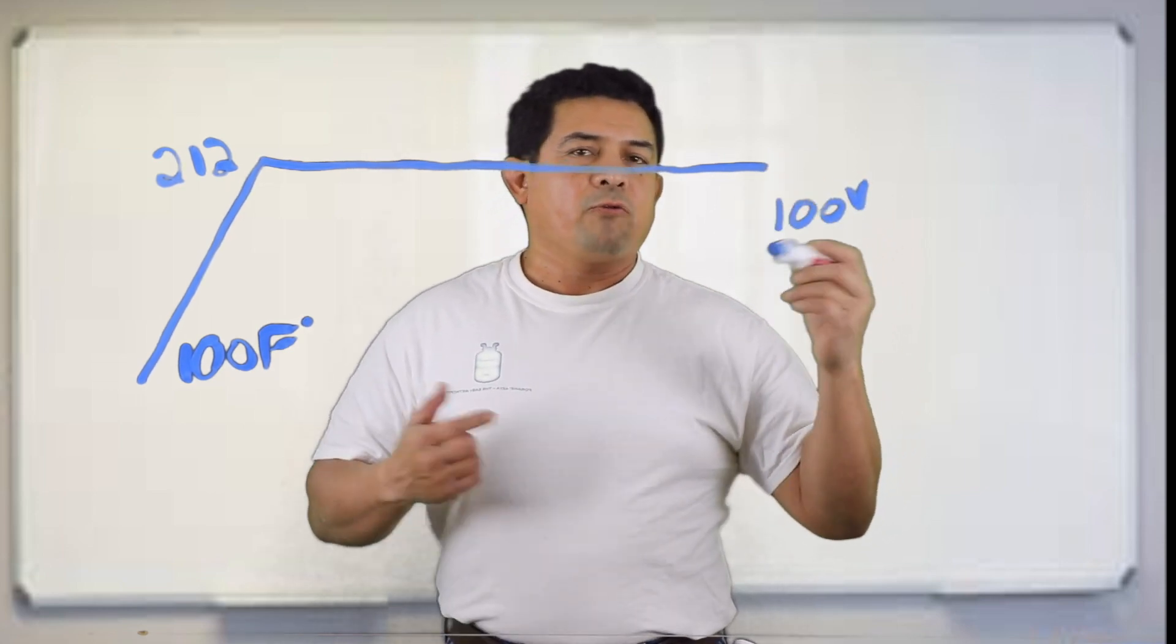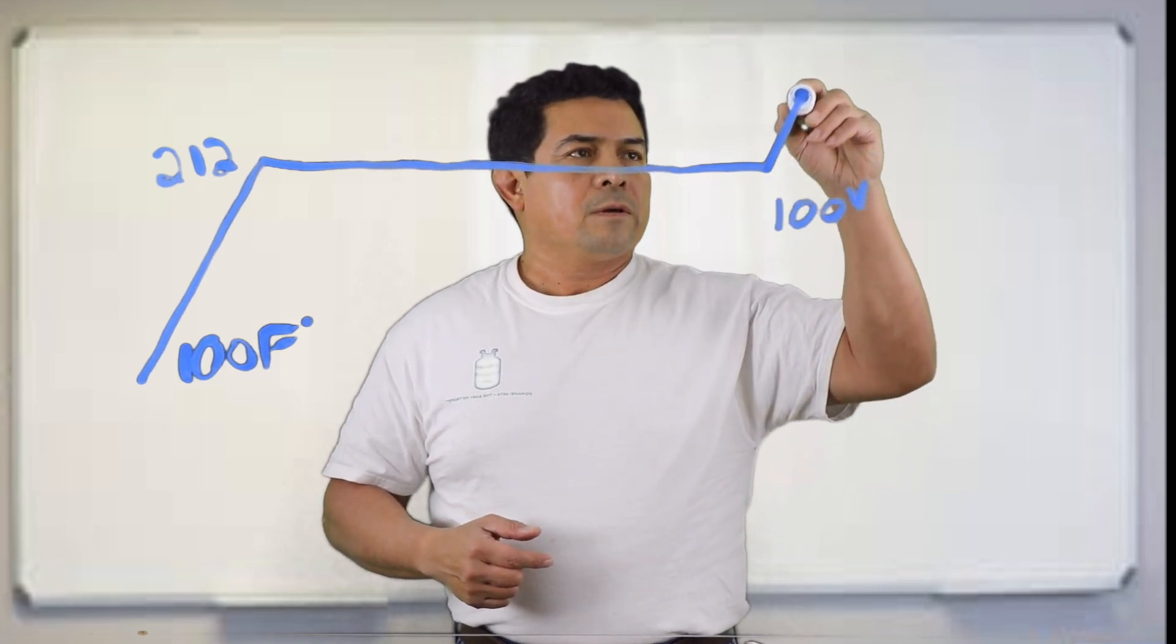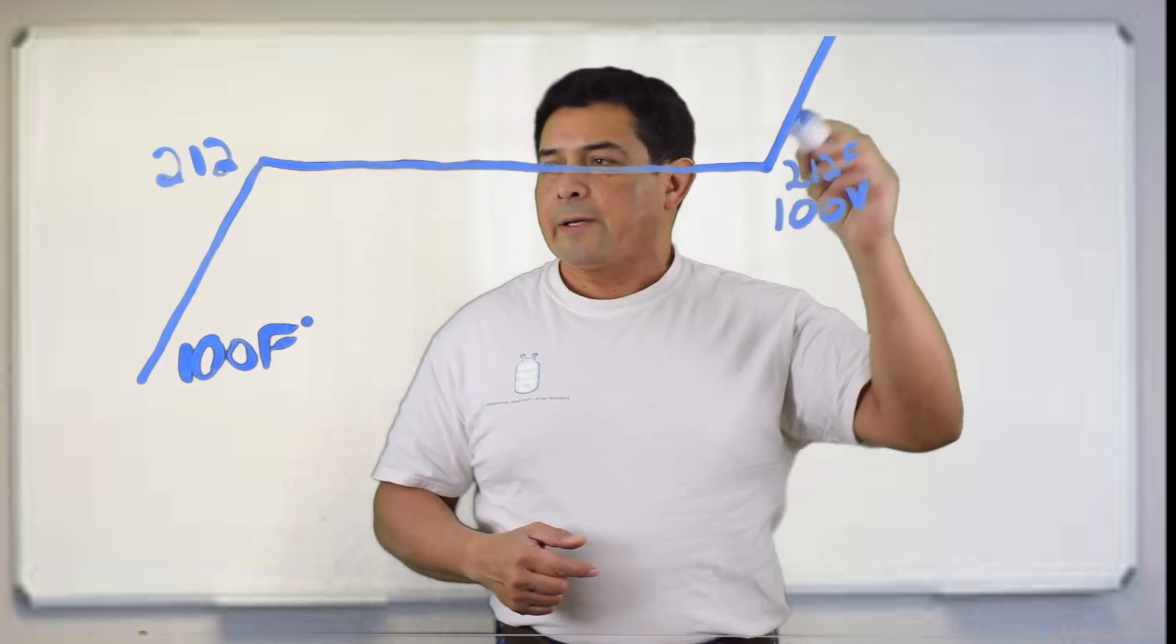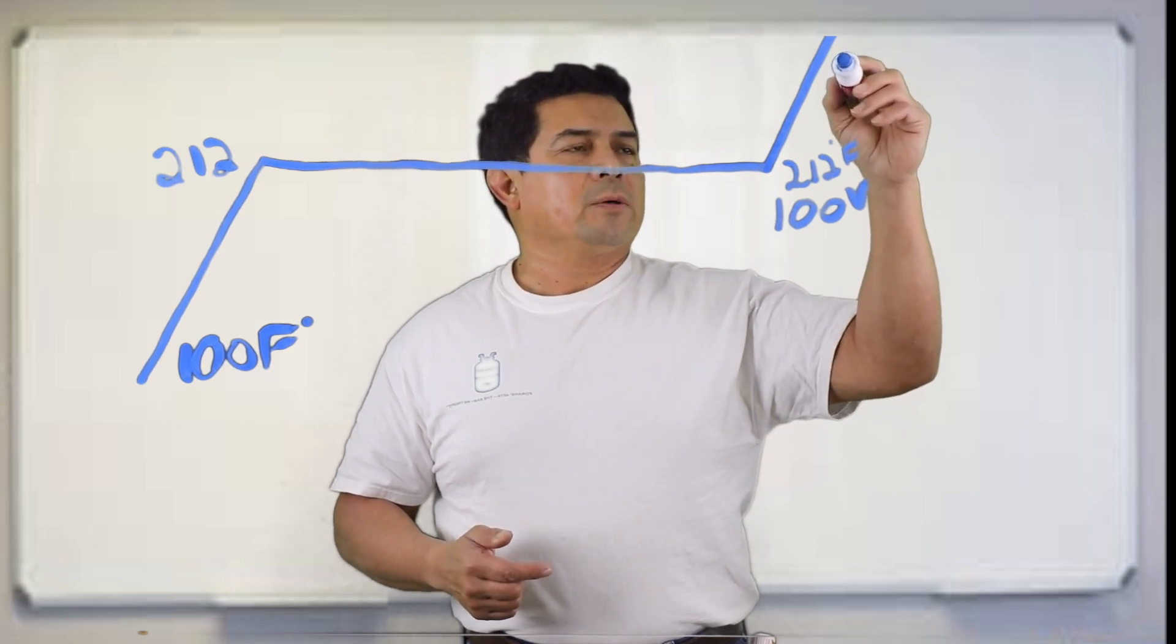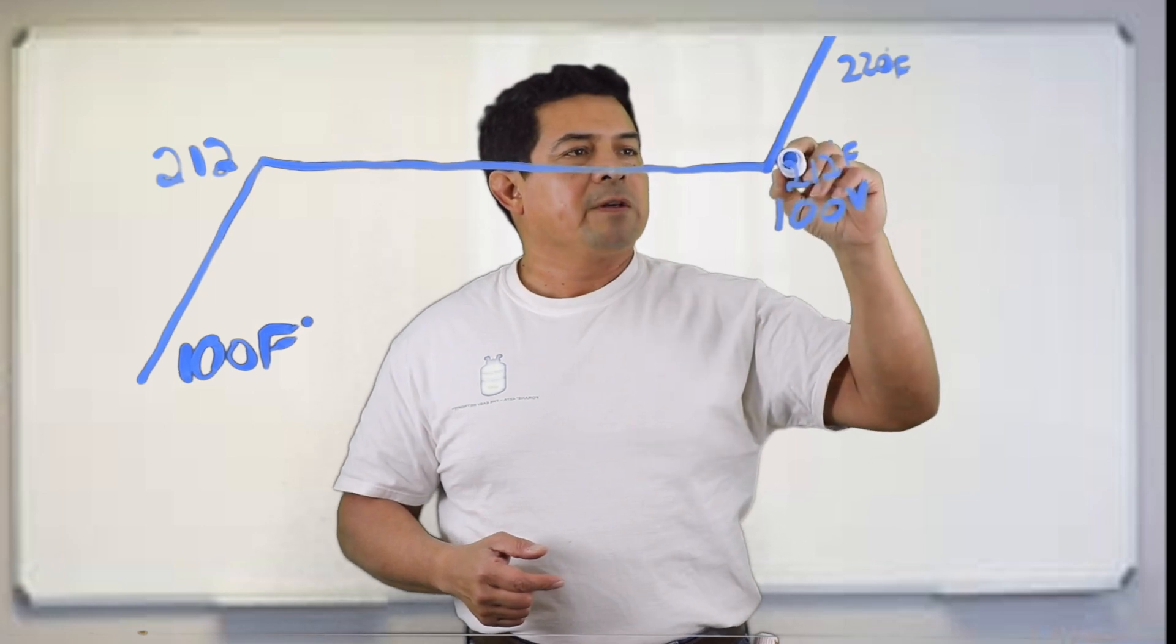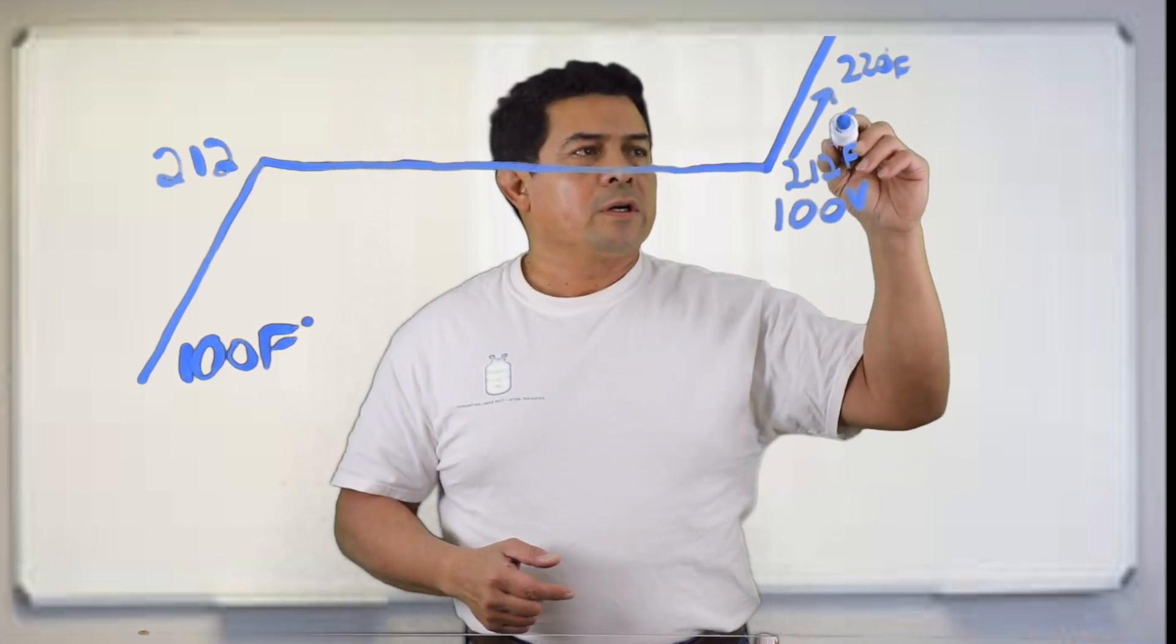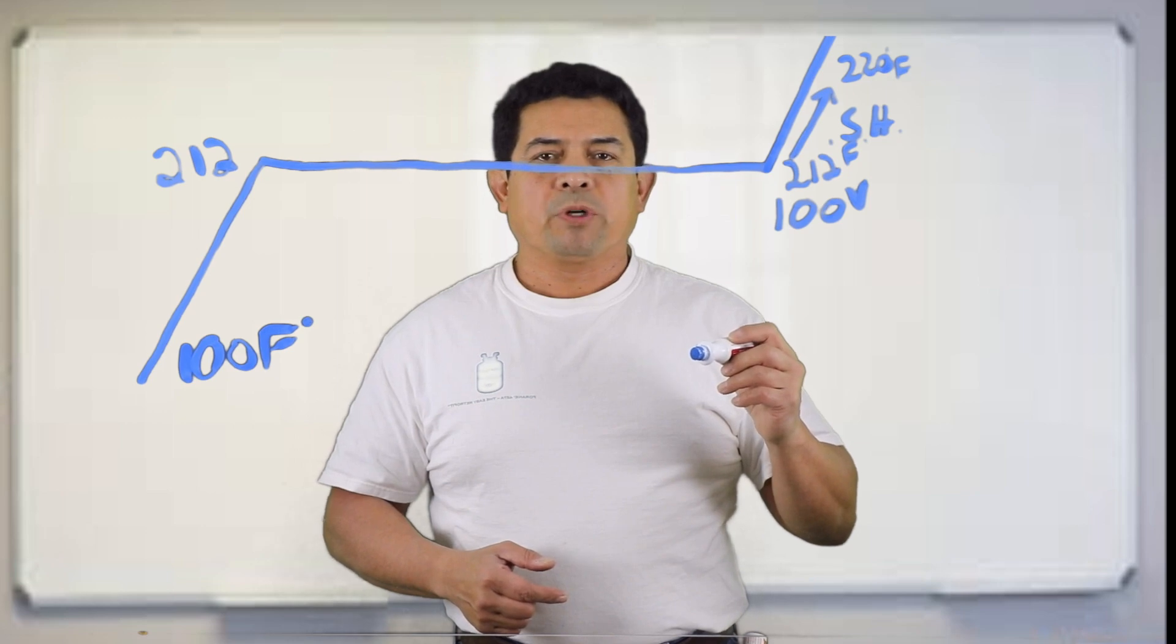Then if we raise the temperature some more, we go up like this. But the temperature here is going to be at 212 degrees Fahrenheit. We could raise the temperature to, let's say, a total of 220 degrees Fahrenheit. So by raising that temperature, what are we doing? We are superheating the steam.